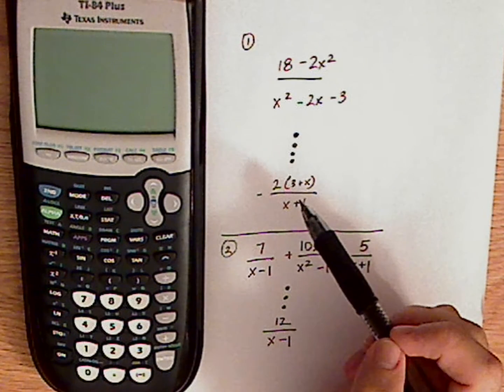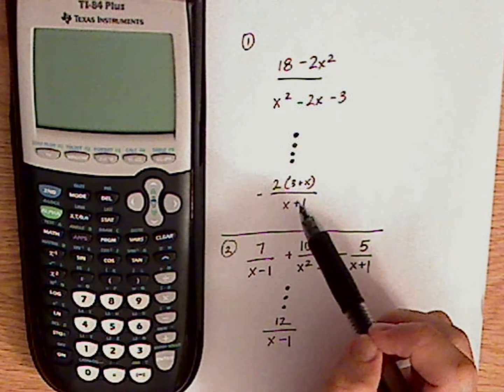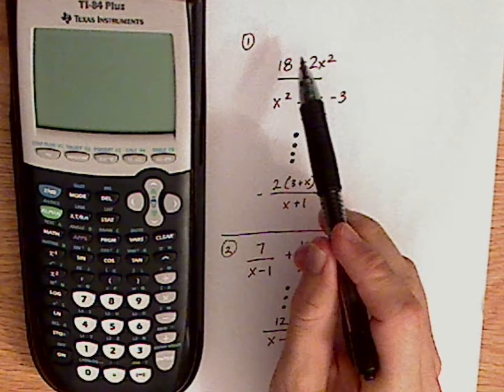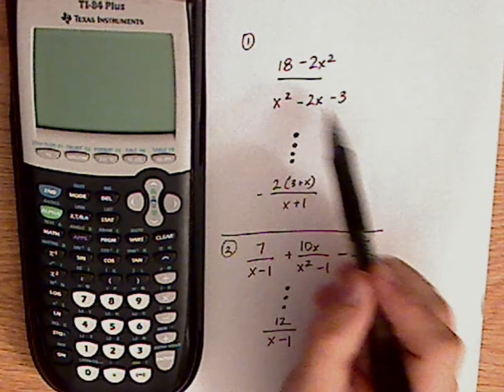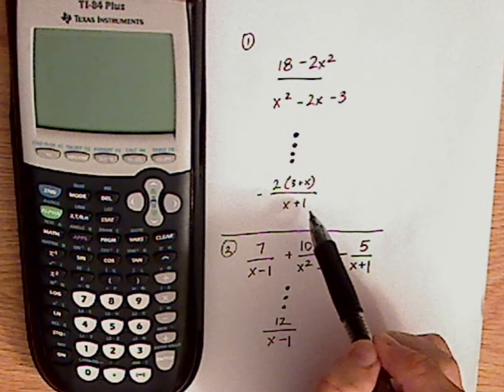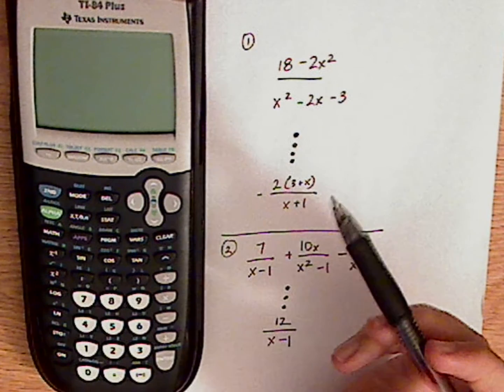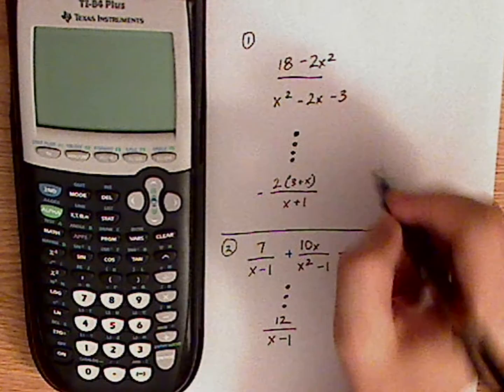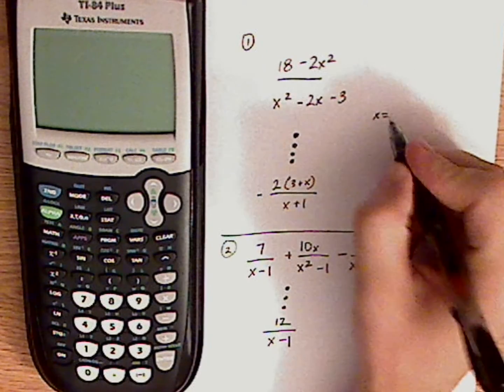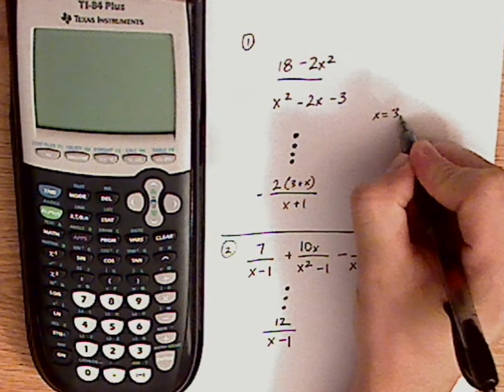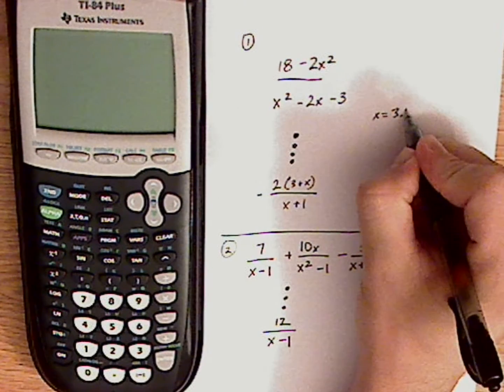Now I would be careful on what x's you choose. I would not choose something that would zero out either the numerator or the denominator. And I would choose something that was, like, completely random. So I would choose my x be something like, x equals, I don't know, 3.45.